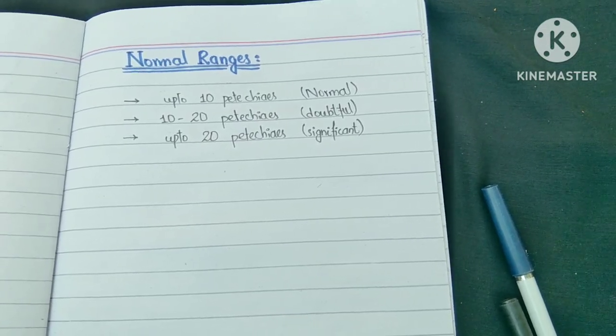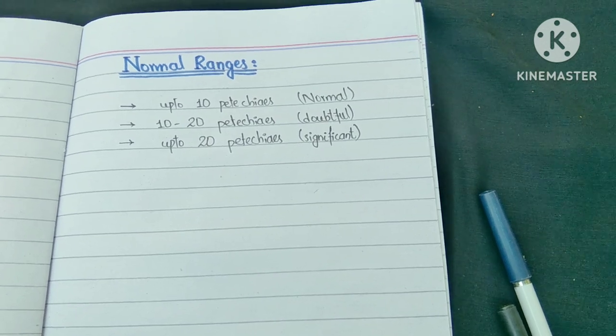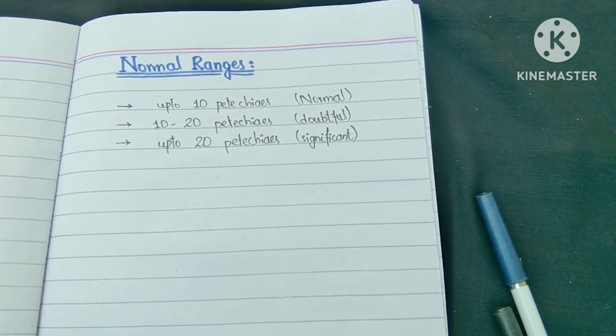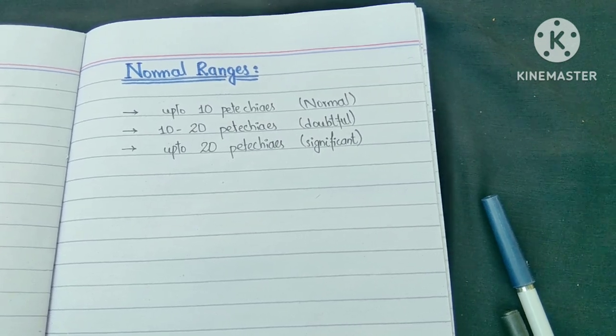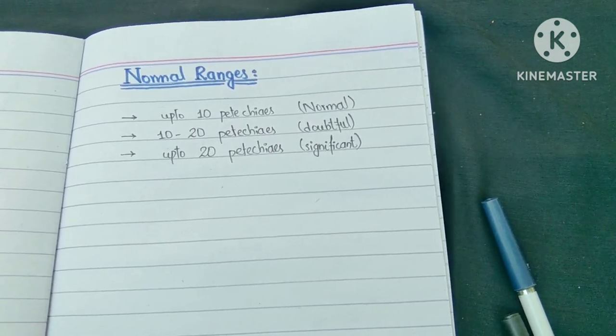If we talk about normal values, if you have fewer than 10 petechiae, then it is normal. If it is 10 to 20 petechiae, then it is doubtful, and if it is more than 20 petechiae, then it is significant.